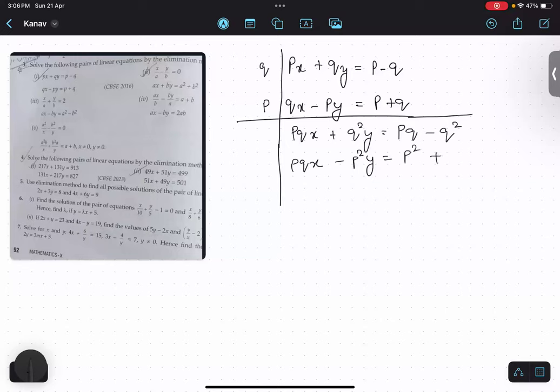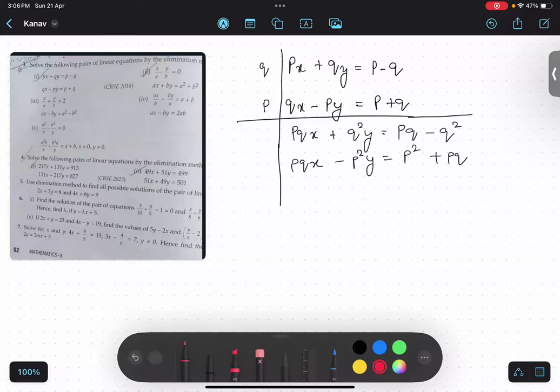And the second equation will become pqx minus p square y equals to p square plus pq. Now I will just simply change the signs. This will become negative, this will become positive, this will become negative, this will become negative.